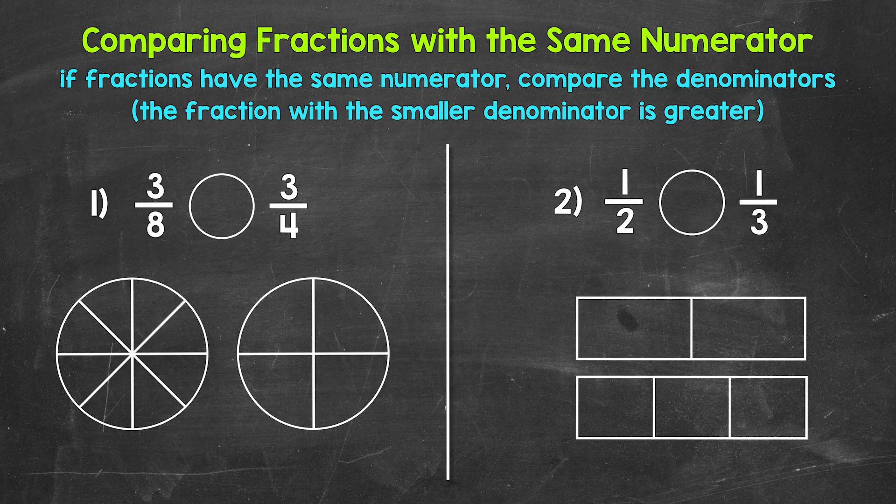Let's jump into number one, where we have 3 eighths and 3 fourths. Reading this from left to right, we have 3 eighths is greater than, less than, or equal to 3 fourths.